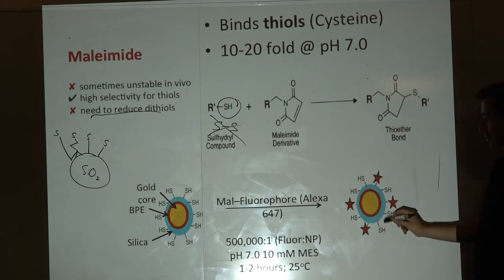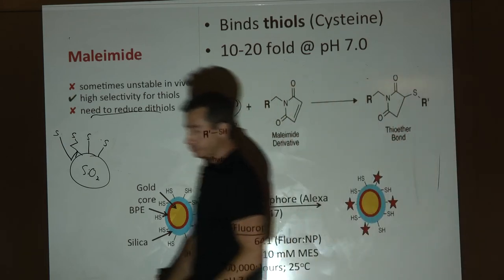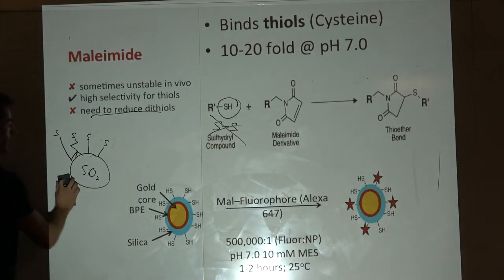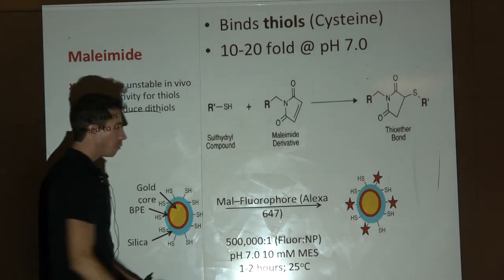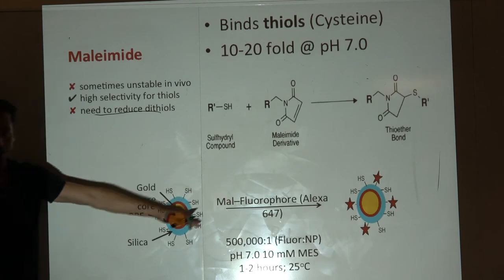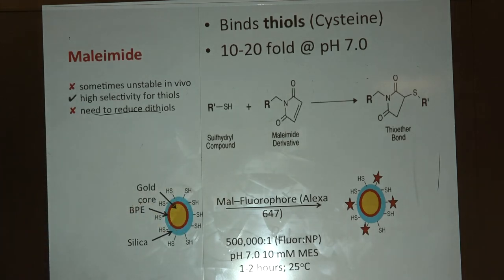When I did the math on one of my own projects, I needed 500,000 more fluorophores on a molar basis than nanoparticles because I had characterized how many thiol groups were on the surface through a colorimetric assay. Maleimide is very powerful because you can buy almost anything with a maleimide or NHS handle.